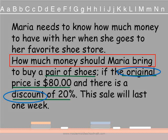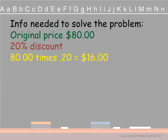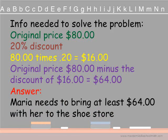The information we can knock out: that it's her favorite shoe store — that doesn't matter. And that the sale will last a week — they haven't asked us how long, just how much money she should bring. The original price is $80. A discount of 20% means you take away from the original price — your new price will be smaller. We solve by computing 80 times 0.20, which gives us $16. But we're not finished — a discount is taken away from the original. So $80 minus $16 gives a discounted price of $64. Maria needs to bring at least $64 to the shoe store.